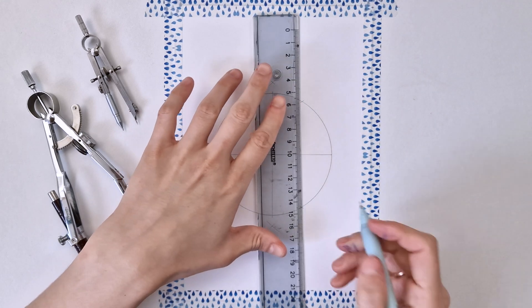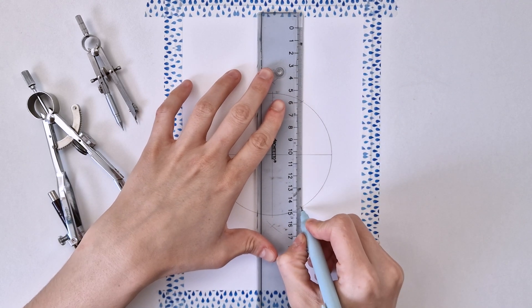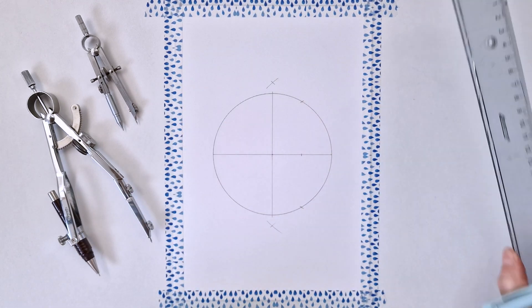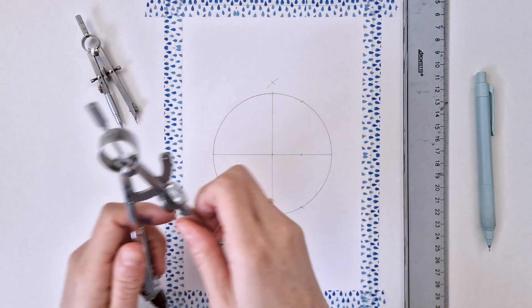Next, I'm aligning my ruler to these two intersections and I'm making a mark on the horizontal line. This will be the center of my next circle.